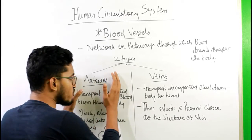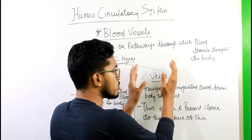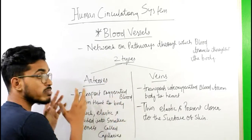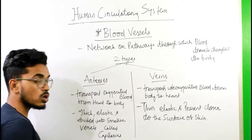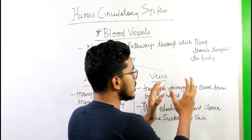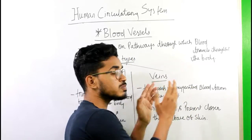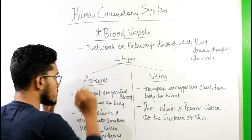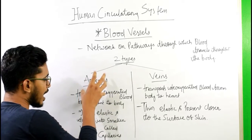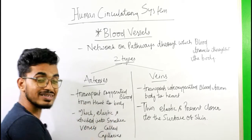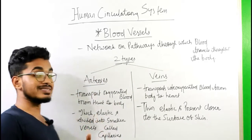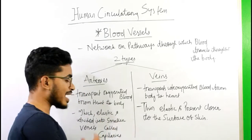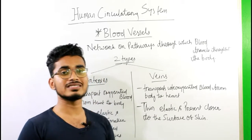Arteries transport oxygenated blood from the heart to all parts of the body — that is the role of arteries. Arteries are thick and elastic in nature and are divided into smaller vessels called capillaries. So arteries divide and form smaller vessels that are called capillaries.